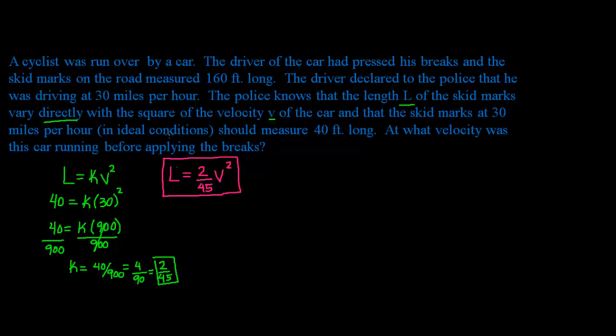At what velocity was this car running before applying the brakes? So I need to know the length of the skid marks so I can solve for V. And that's the first thing they gave us at the beginning of the problem. They told us the skid marks measured 160 feet long. So I'm going to plug that in. So I'm going to write 160 is equal to 2 over 45, which is your K, times V squared.